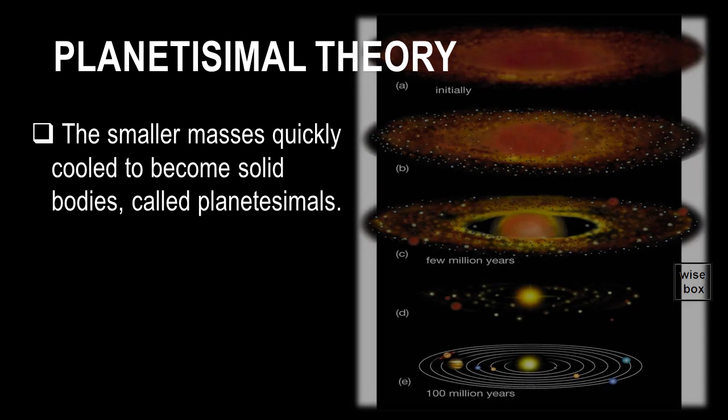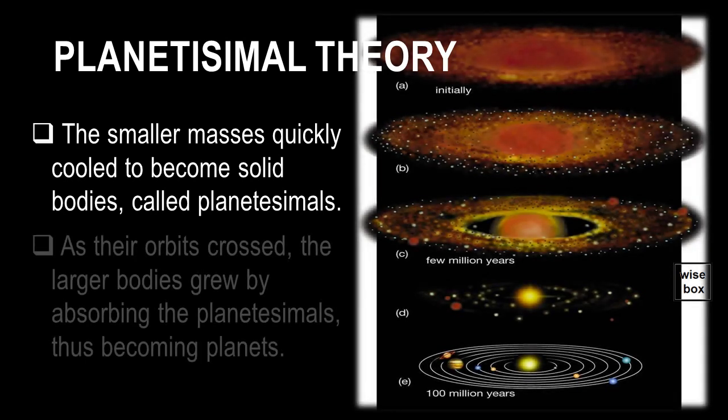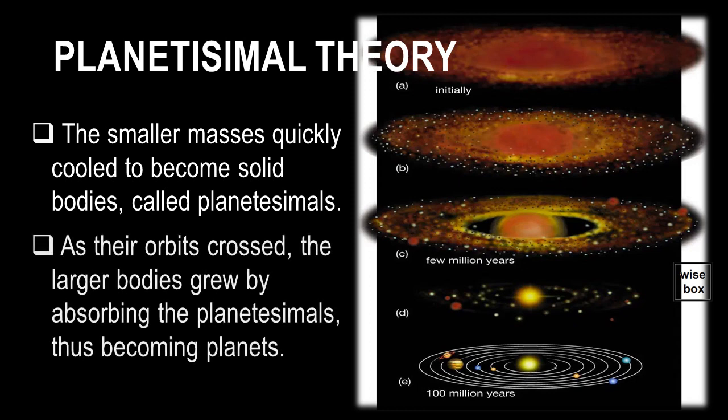As their orbits crossed, the larger bodies grew by absorbing the planetesimals, thus becoming planets.